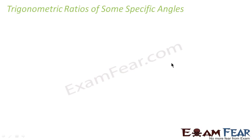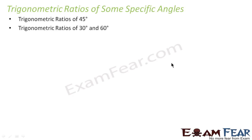We will now study trigonometric ratios of some specific angles. We will find trigonometric ratios of 45 degrees, 30 degrees, and 60 degrees, and we will also find values for 0 degrees and 90 degrees. All these angles are very much required in solving questions.